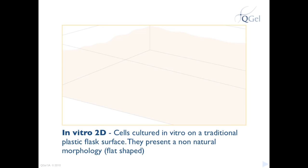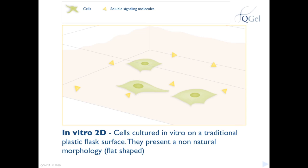Here we see an example of how cells expand in 2D. Placing cells on a flat surface, such as on a plastic flask surface, with the necessary soluble signaling molecules will result in a non-natural proliferation of cells on the flask surface.